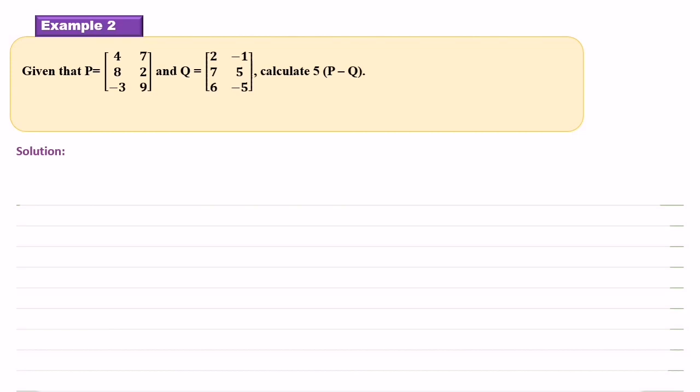To know further, let us look at example 2. Given that matrix P, this one, and matrix Q, this one, calculate 5 bracket matrix P minus matrix Q. So how to do it? Very simple. Just write like this: 5, and draw a big bracket inside the bracket matrix P minus matrix Q.